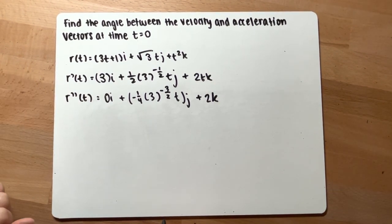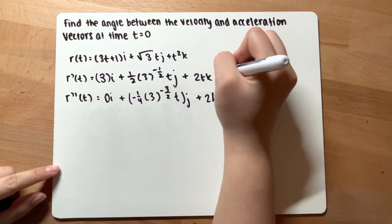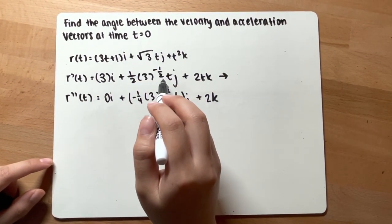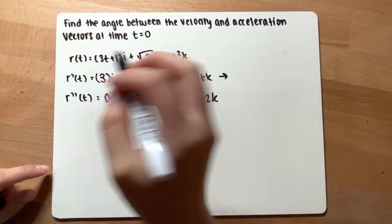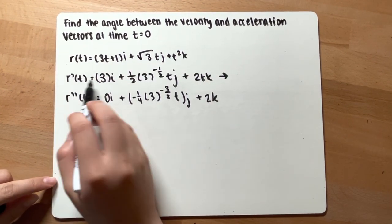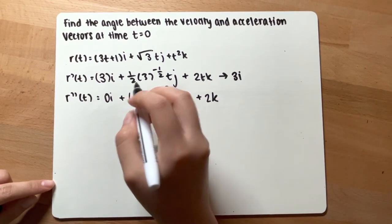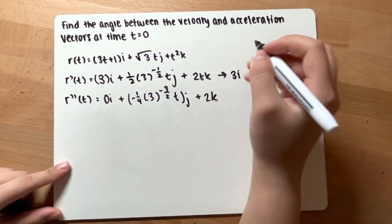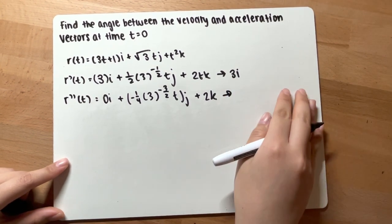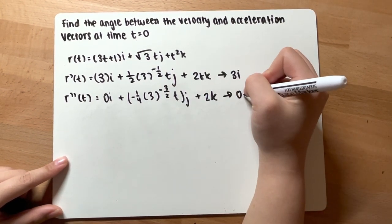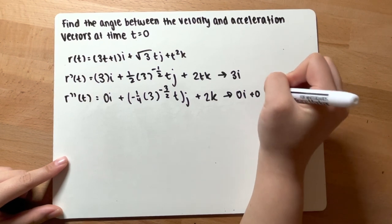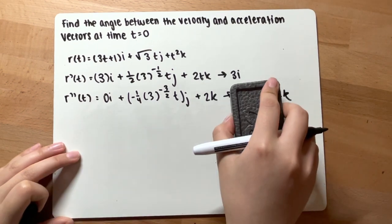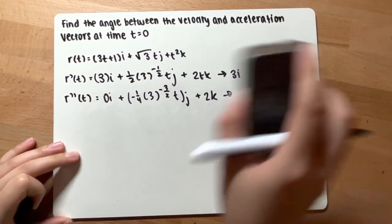Alright. Now, let's simplify this. Let's plug 0 in for t for both of our vectors. So for the velocity vector, you would get 3i plus 0 times anything is 0. So this would be 0 and this would be 0. Now for this acceleration vector, you have 0i plus 0j plus 2k. So you are left with 2k.